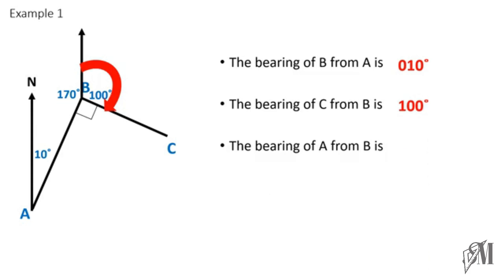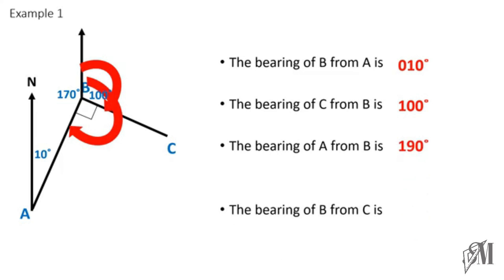For the bearing of A from B: turning clockwise from north at B, we already have 100°, and then an additional 90°, giving 100 + 90 = 190 degrees. So the bearing of A from B is 190 degrees.